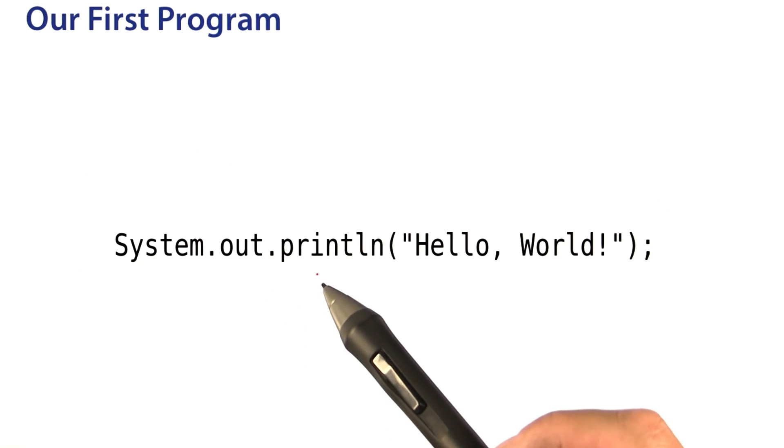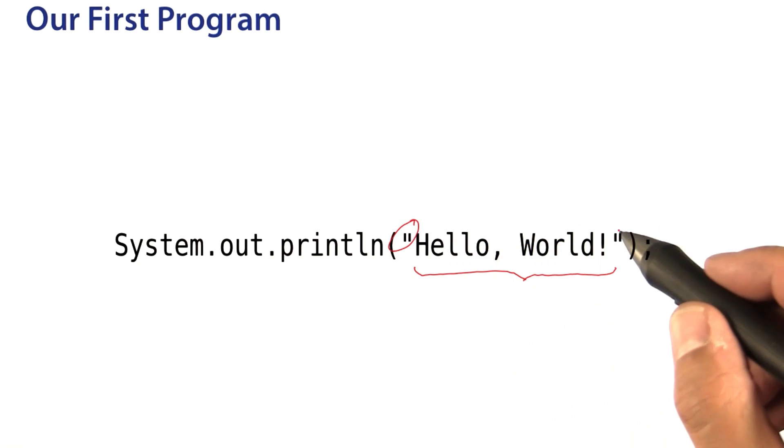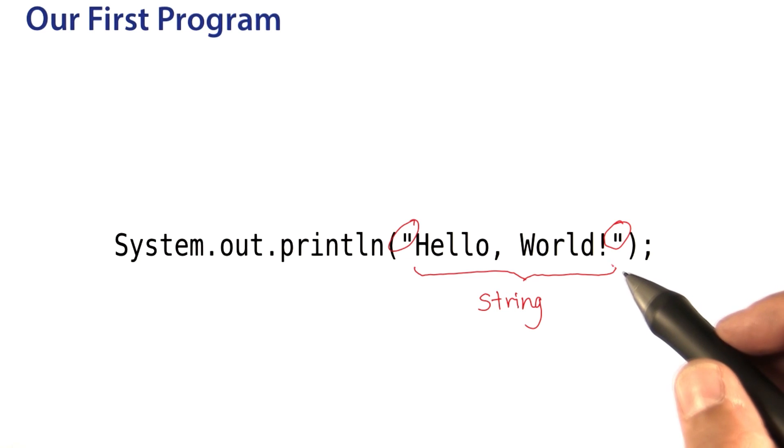Let's focus on the important statement. Text like this, that's enclosed in quotation marks, is called a string. That's just a technical term for the text. This statement here prints the string.